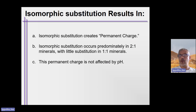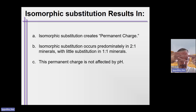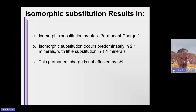Isomorphic substitution occurs predominantly in two-to-one type minerals or clays, with very little substitution in one-to-one type clay minerals. This is simply because two-to-one type clay minerals have more locations for isomorphic substitution to occur — it's a three-layer sandwich with two tetrahedral sheets and one octahedral sheet sandwiched in between, providing more sites for substitution compared to one-to-one type clays with one tetrahedral sheet to one octahedral sheet.